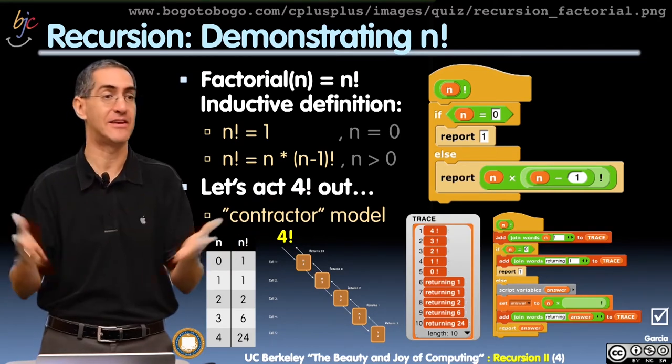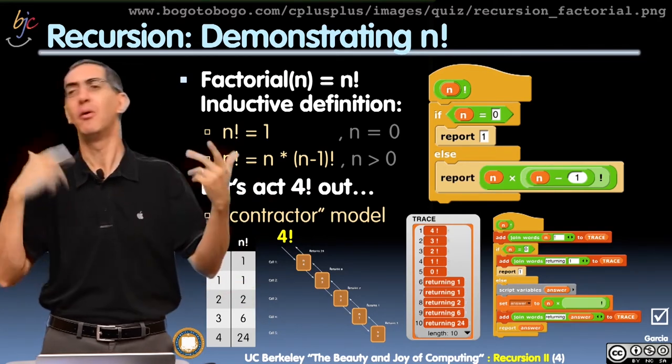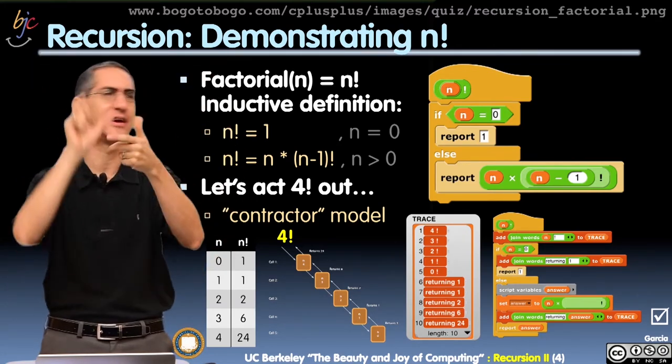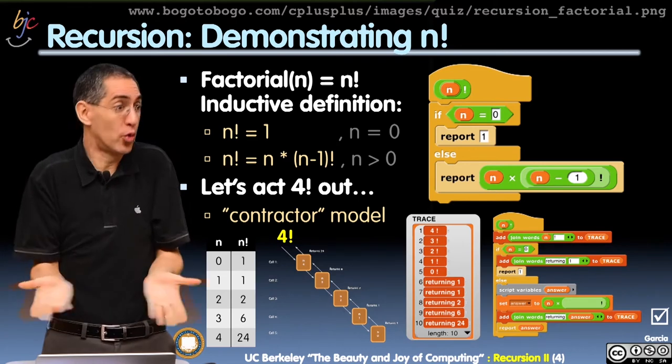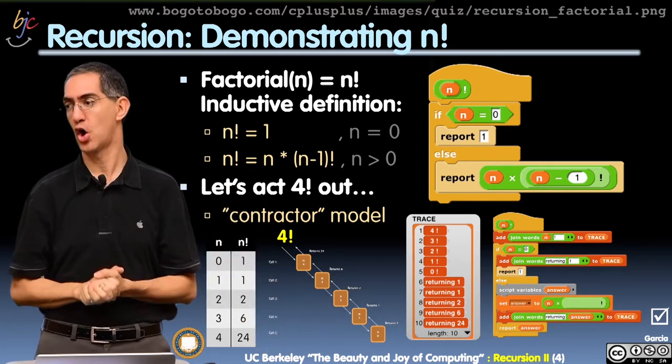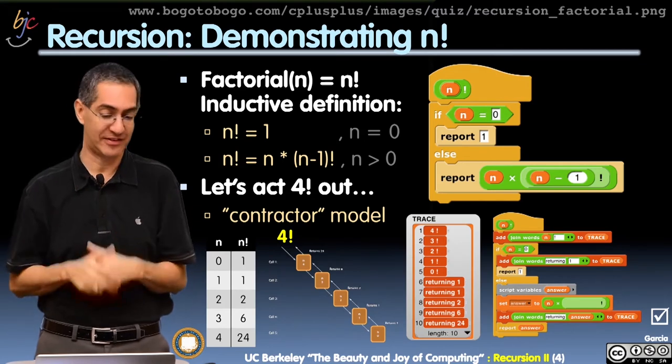So when you get an inductive definition or recursive definition, think recursion, it's much easier to write that way. If I gave this to you and said write this but you can't use recursion, well, now it's harder. You're setting up a product variable, you've got to initialize it, it's harder work. I think it's harder work than just copying the straight definition to code. So often you have it just handed to you.